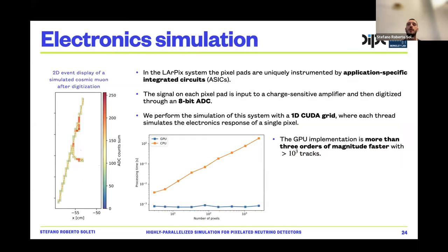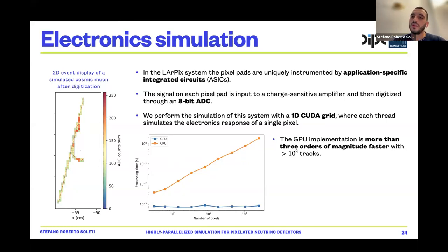Once you know the charge collected by each pixel, you need to digitize the signal. In the LArPix system, the pixel pads are instrumented by application-specific integrated circuits (ASICs). The signal in each pixel is input to a charge-sensing amplifier and digitized through an 8-bit ADC. Simulating this on a one-dimensional CUDA grid, each thread simulates the electronics response for a single pixel. The GPU implementation is more than 3 orders of magnitude faster when you have more than 10^3 pixels.